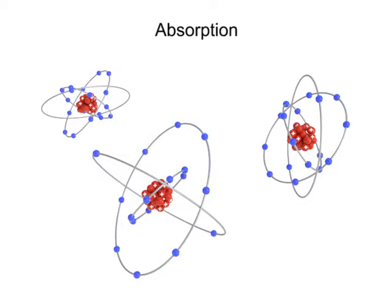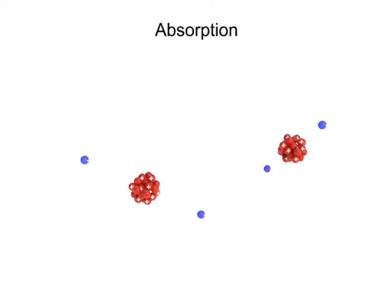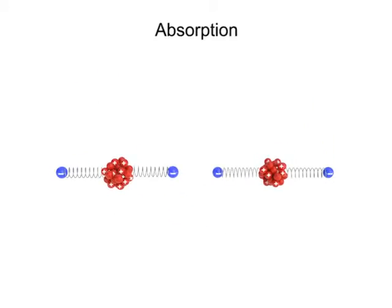Imagine that the electrons in an atom are attached to the nucleus by springs. The elasticity of these imaginary springs will determine how much the atom vibrates when acted upon by an incoming particle of light energy.